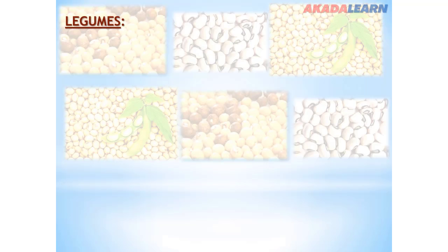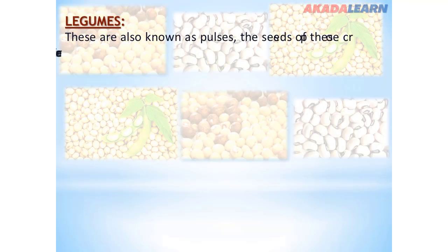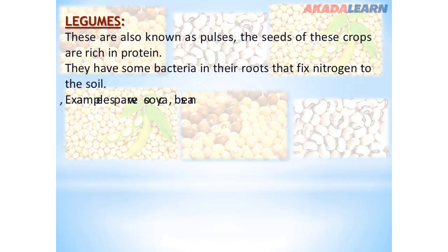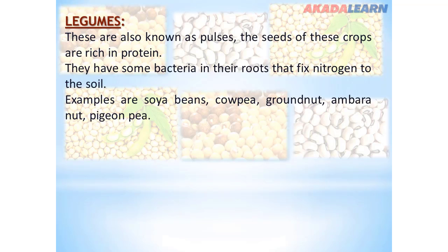The next one is legumes. Legumes are crops also known as pulses. The seeds of these crops are rich in protein. They have bacteria in their roots that fix nitrogen into the soil. Examples of such crops are soybeans, cowpea, groundnuts, bambara nuts, and pigeon peas.